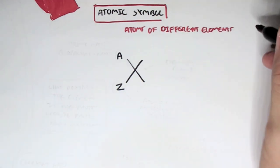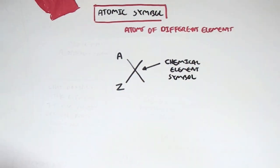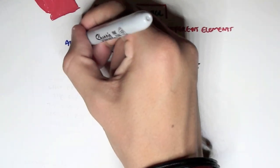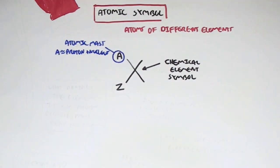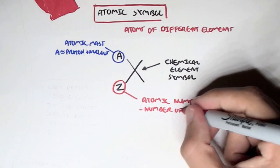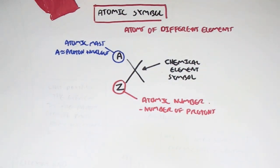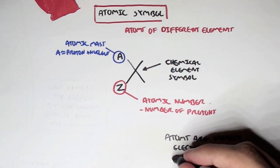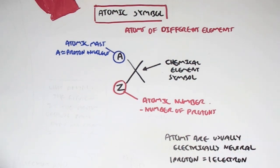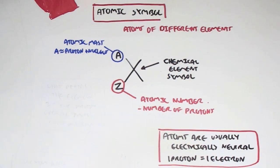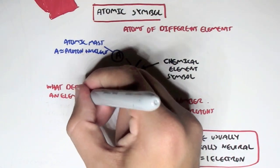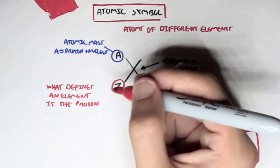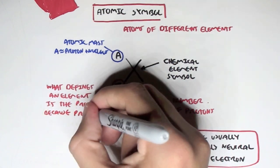Atomic symbol. Here we have the typical atomic symbol, where X is a chemical element symbol. A is the atomic mass. Usually roughly, if we add the protons and neutrons together, we'll make up the atomic mass. Z is the atomic number, which is essentially the number of protons. And atoms are usually electrically neutral. What defines an element is the protons, because proton does not change. So the atomic number defines what type of element it is.